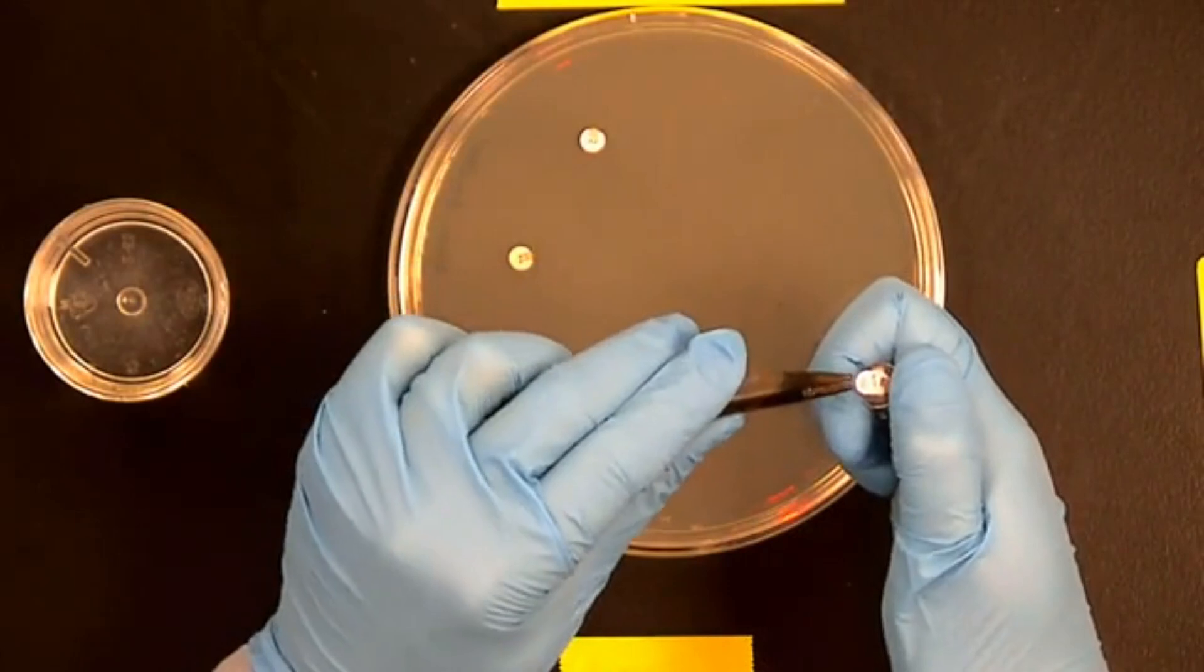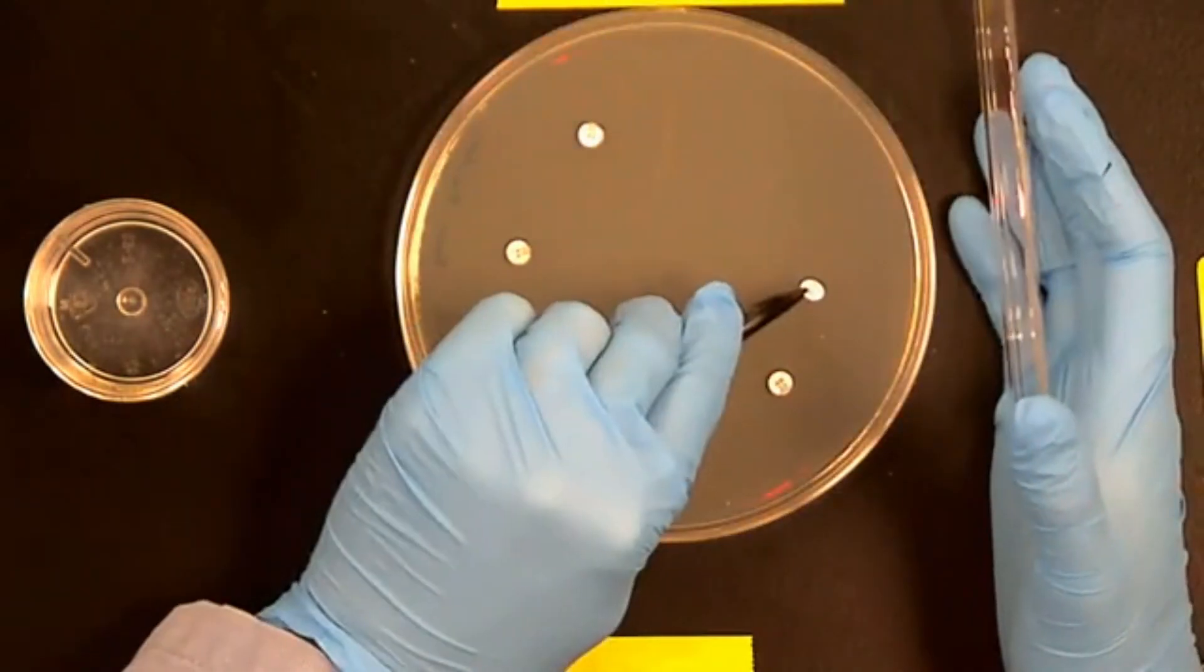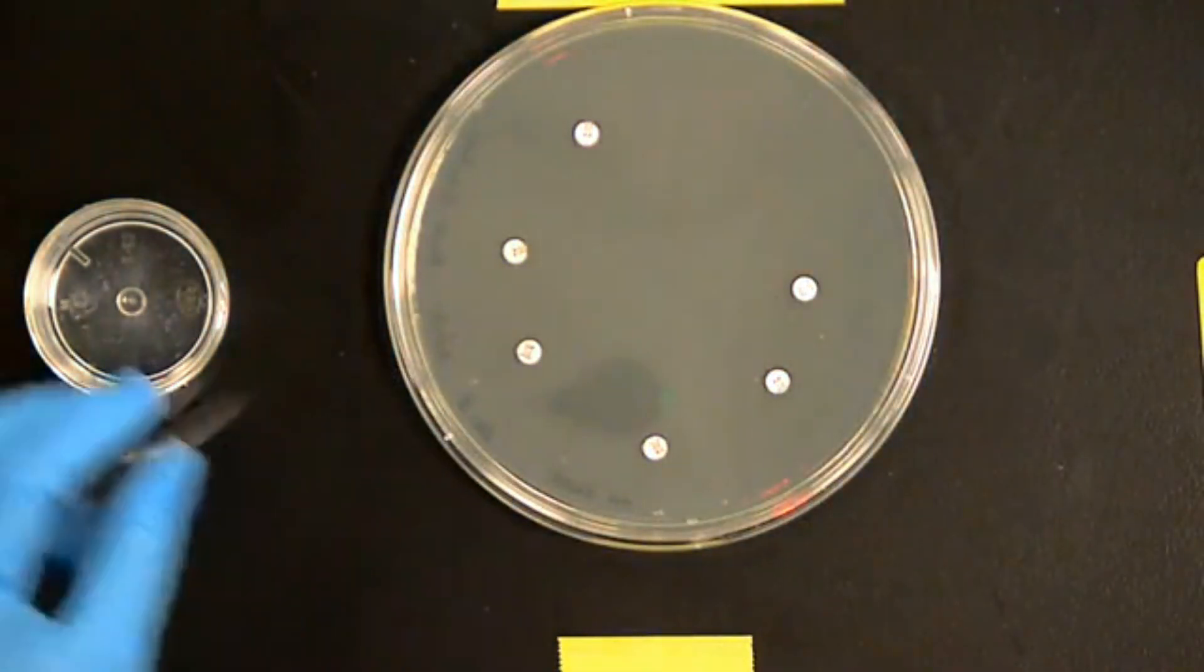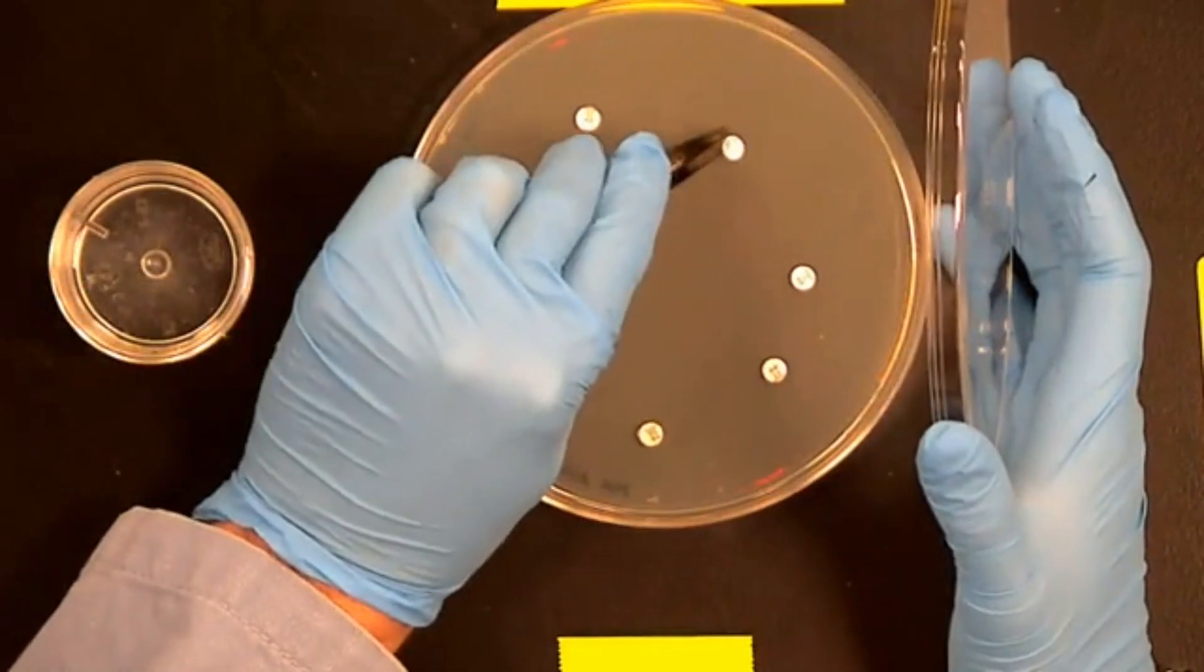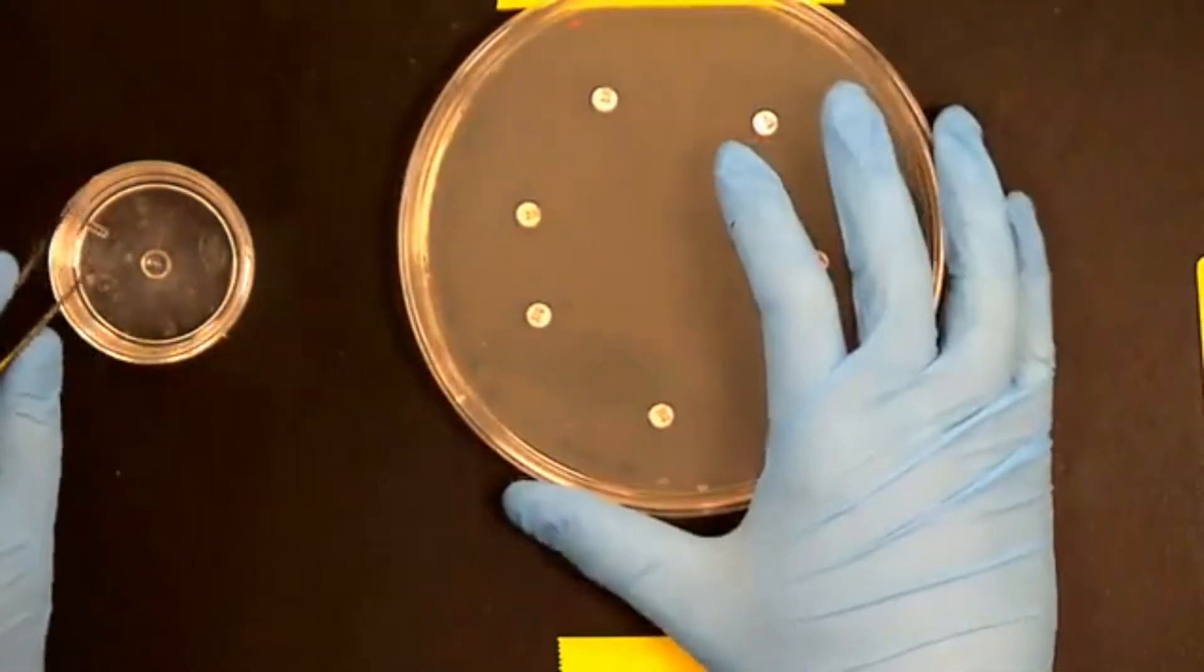So you can see as I place these discs onto this plate, they are roughly equally spaced. This is going to be determined by the number of total discs that you're going to be placing. The number will be either six or eight discs, depending on the bacteria.